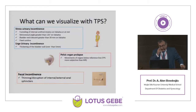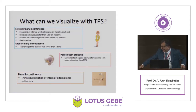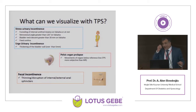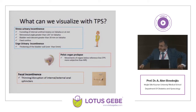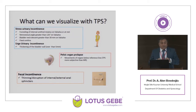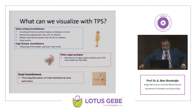What can we visualize with transperineal or translabial sonography? There are four important topics. The first is stress urinary incontinence — what we can see and what we should look for. The second is urge incontinence. The third is pelvic organ prolapse. And the fourth is fecal incontinence.